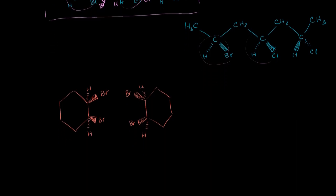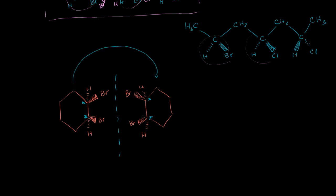Now let's do this last one. We have this cyclohexane ring with a bromine on the number one and number two positions. They look like mirror images of each other — you could put a mirror right there between them. This is a chiral carbon: it's bonded to one carbon group that has a bromine versus a carbon group that has only hydrogens, plus a hydrogen and a bromine. That is chiral, and the same argument applies to the other carbon — that is also chiral. They are mirror images of each other and each has two chiral centers. But all you have to do is flip this molecule over and you will get this molecule. These are the same molecule.